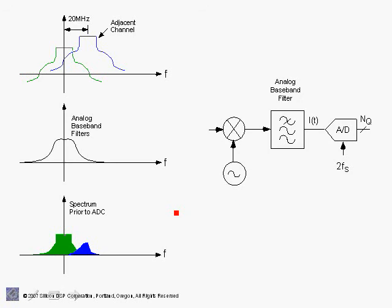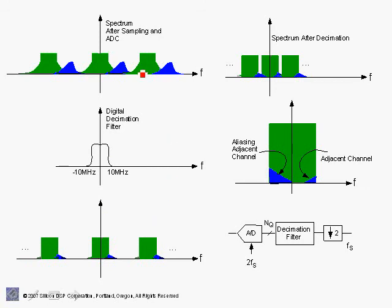Let's investigate the constraints on the analog baseband filter needed to prevent aliasing when we sample and convert to digital. When we pass the signal at the mixer output through the analog baseband filter — which filters out the harmonic components, keeping only the baseband components — we get the spectrum prior to analog-to-digital conversion. We observe that the adjacent channel is only partially filtered out, leaving a large component still present in the signal.